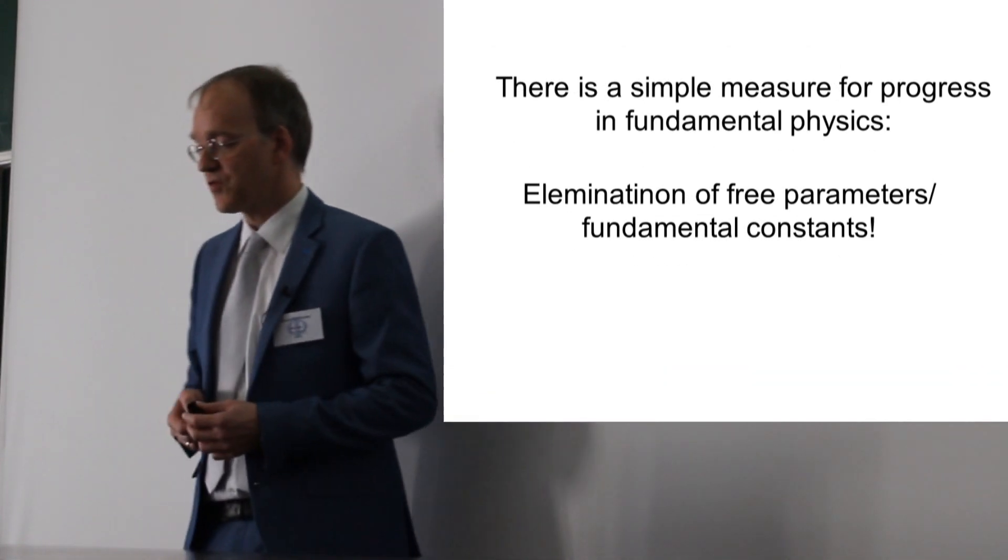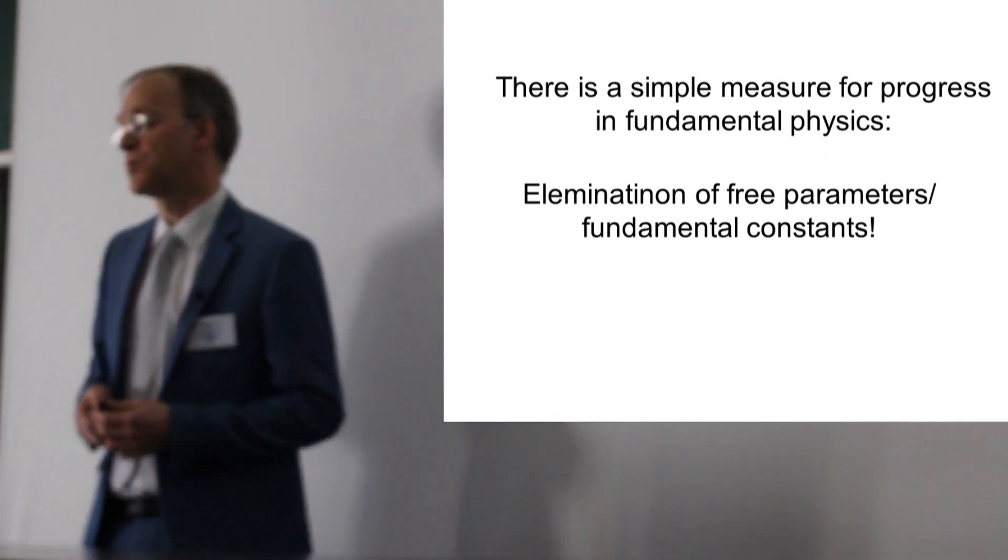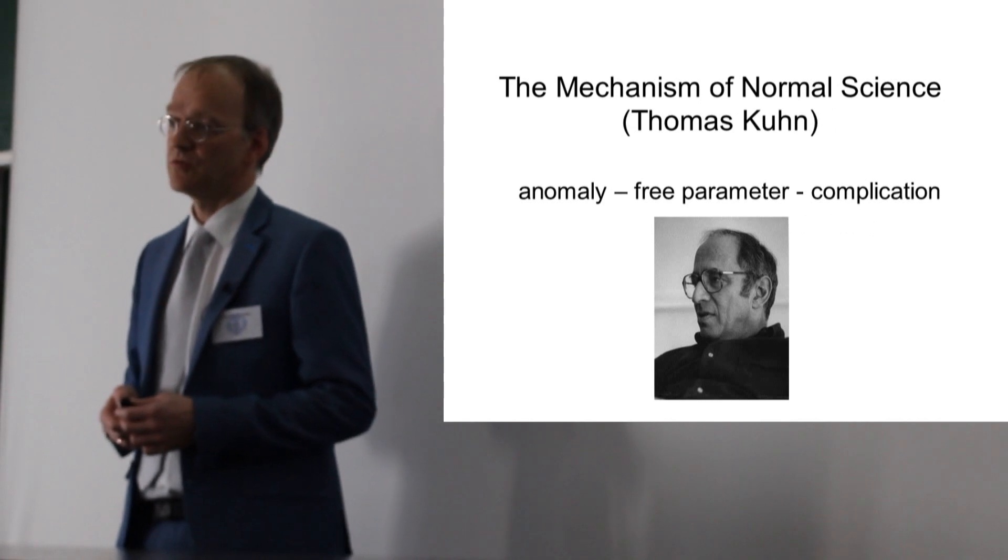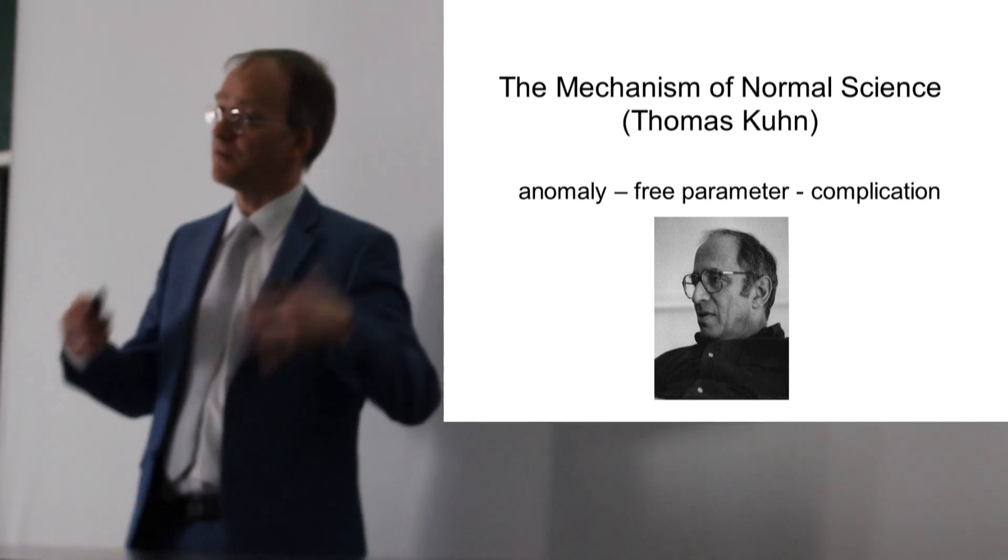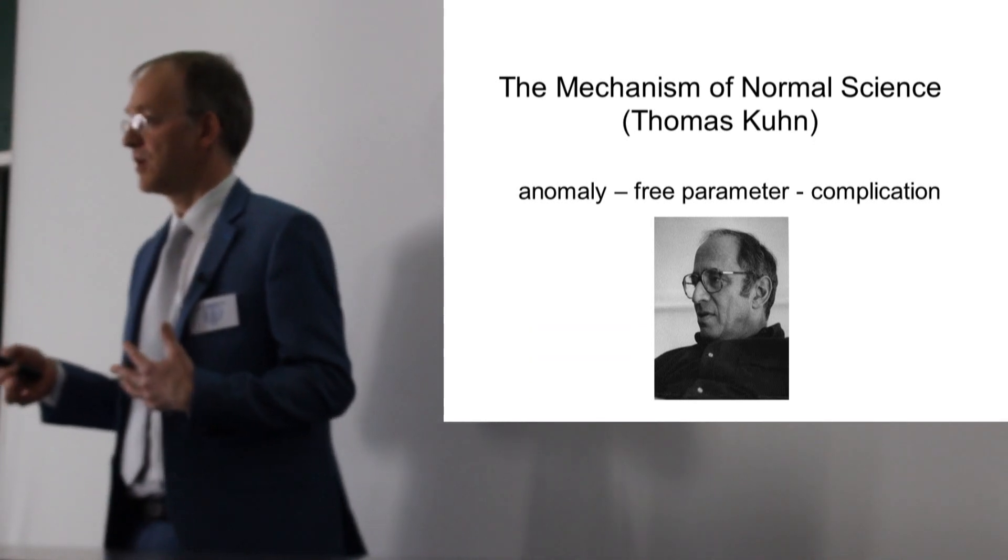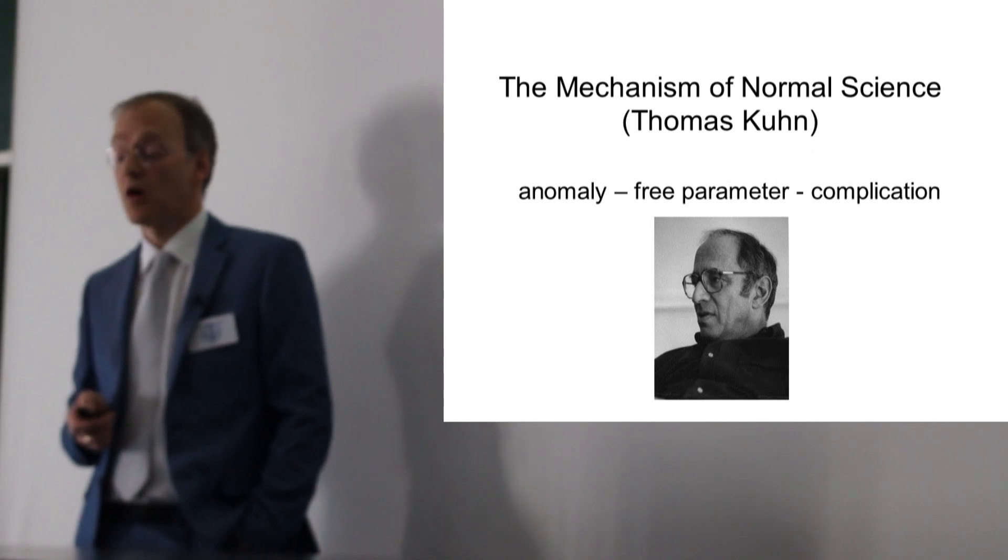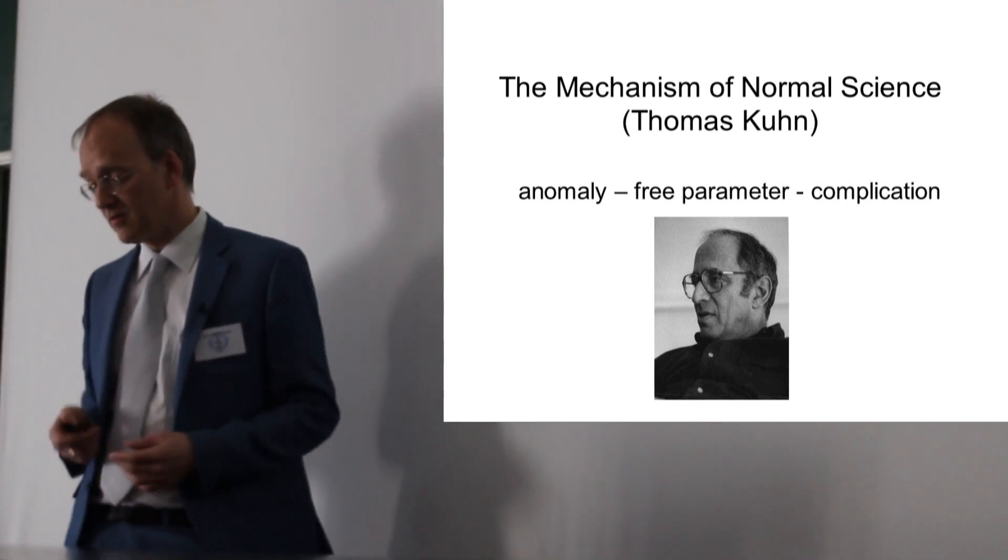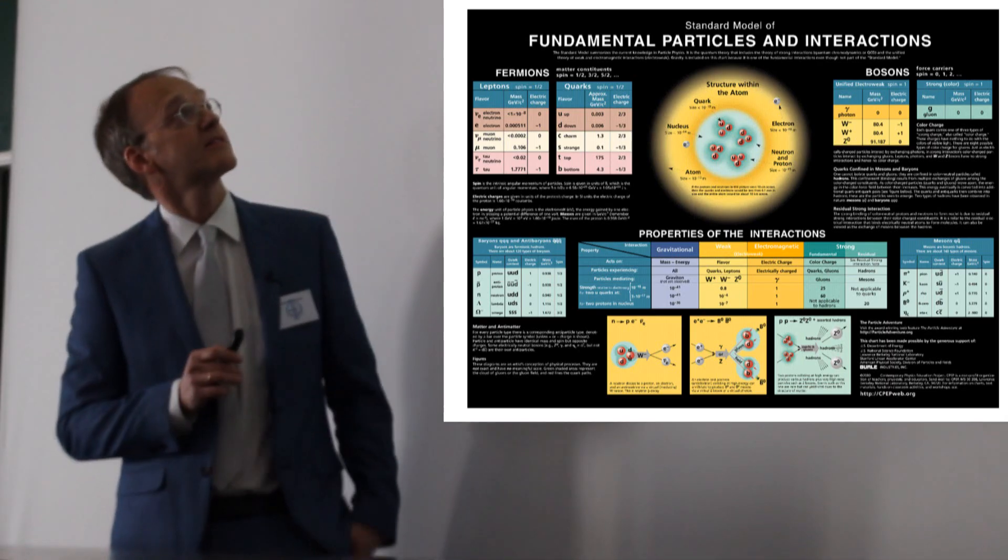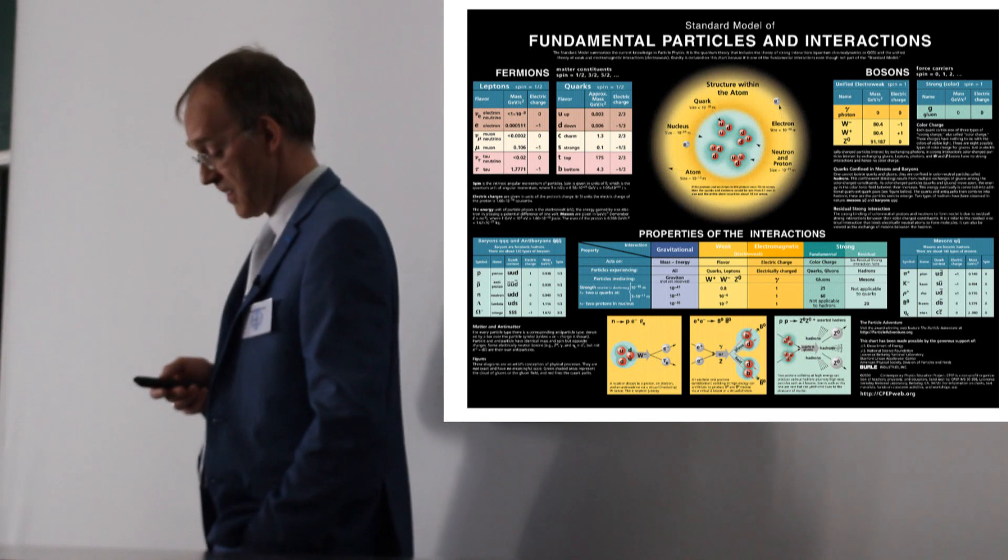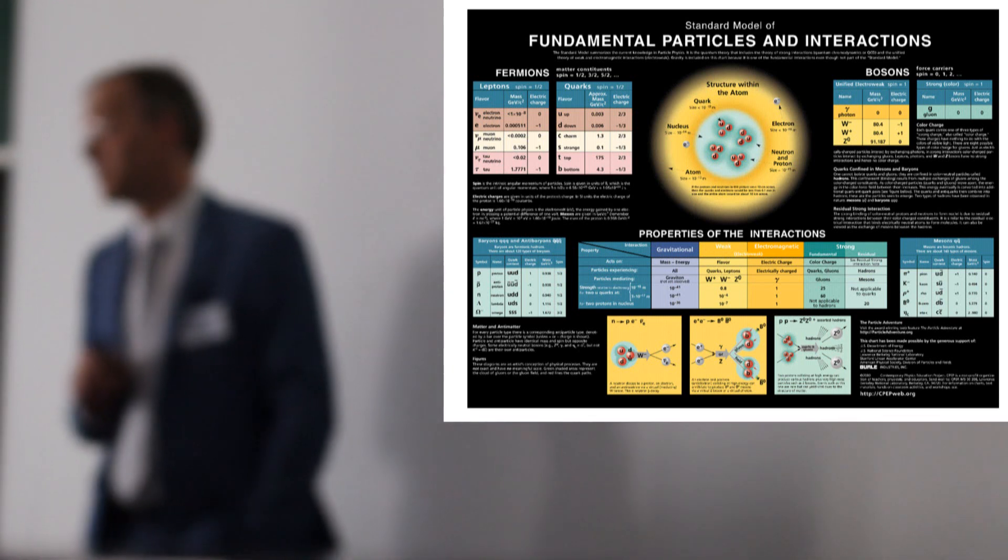This is an important general picture. There is a simple measure for progress in fundamental physics: elimination of free parameters or fundamental constants. This relates to Thomas Kuhn's picture in his famous book, The Structure of Scientific Revolutions. You're doing observations and you have a model, then you have an anomaly. Often to not falsify the entire theory, a free parameter is added to the model, and then you have complication of the model.